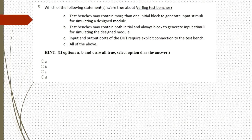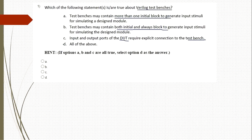Test benches may contain both initial as well as always blocks to generate stimuli — yes, it can contain both. The third option: input and output ports of the DUT (design under test) require explicit connection to the test bench — yes, it requires explicit connection to map inputs and outputs to registers and wires. All three options are correct, so D is the correct answer.